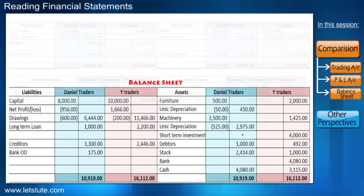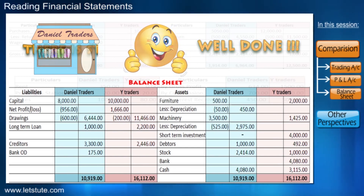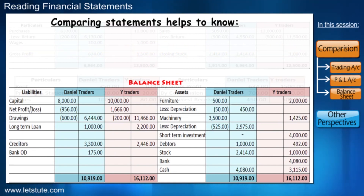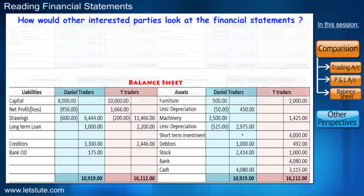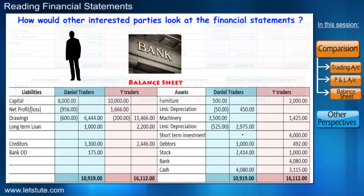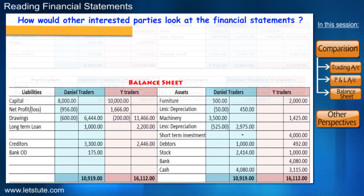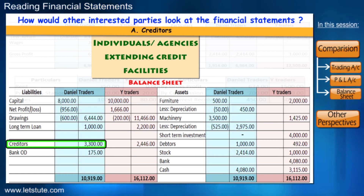Overall he did quite well considering it was his first year of operation, but there is a lot of scope for improvement. By comparing to others, you get an idea of where you stand and how you can improve. Now we would talk about how other parties — like creditors, banks, or government — would look at our financial statements. Creditors are individuals or agencies that have extended credit facilities to Mr. Daniel. His creditor dues are 3,300 in total, which is not alarmingly high.